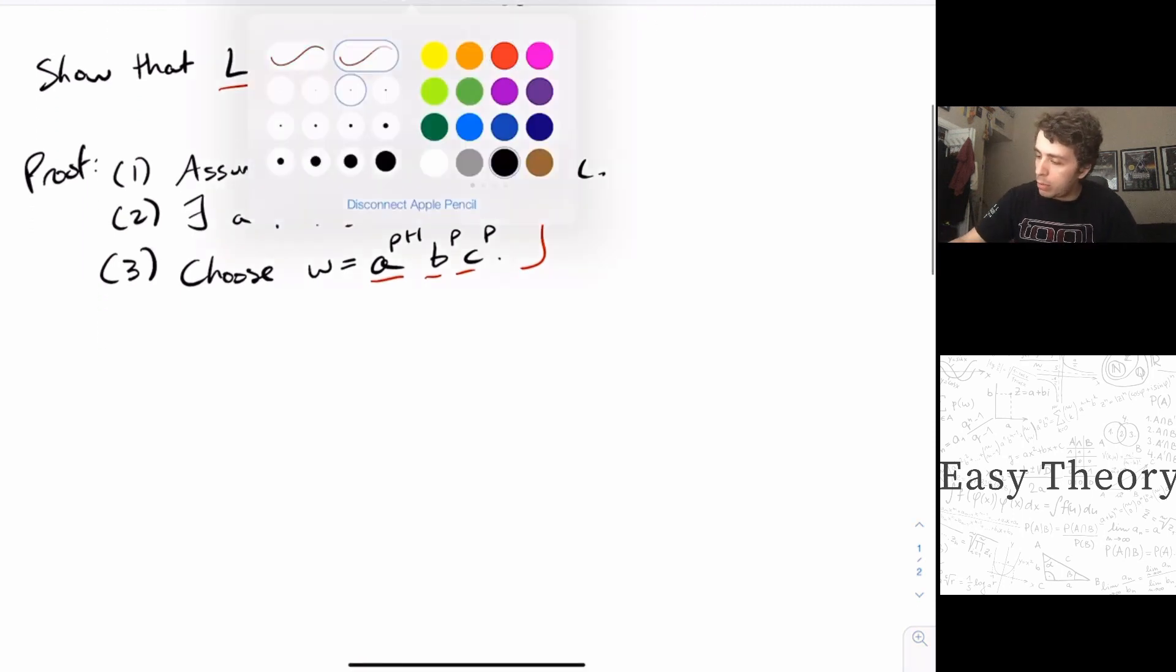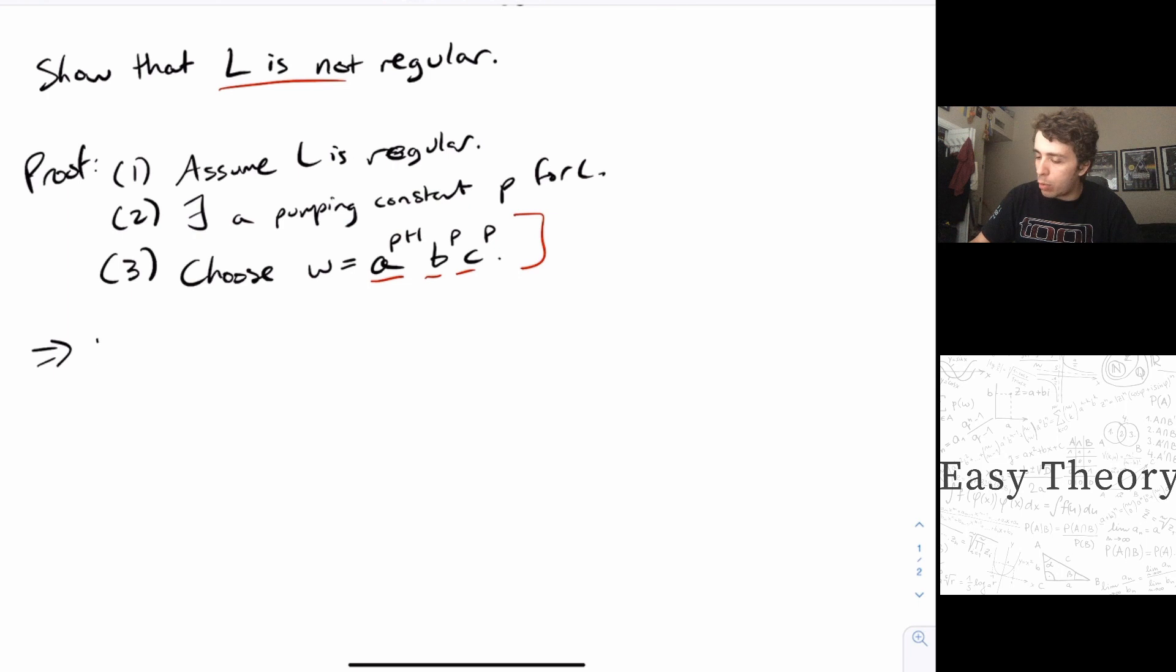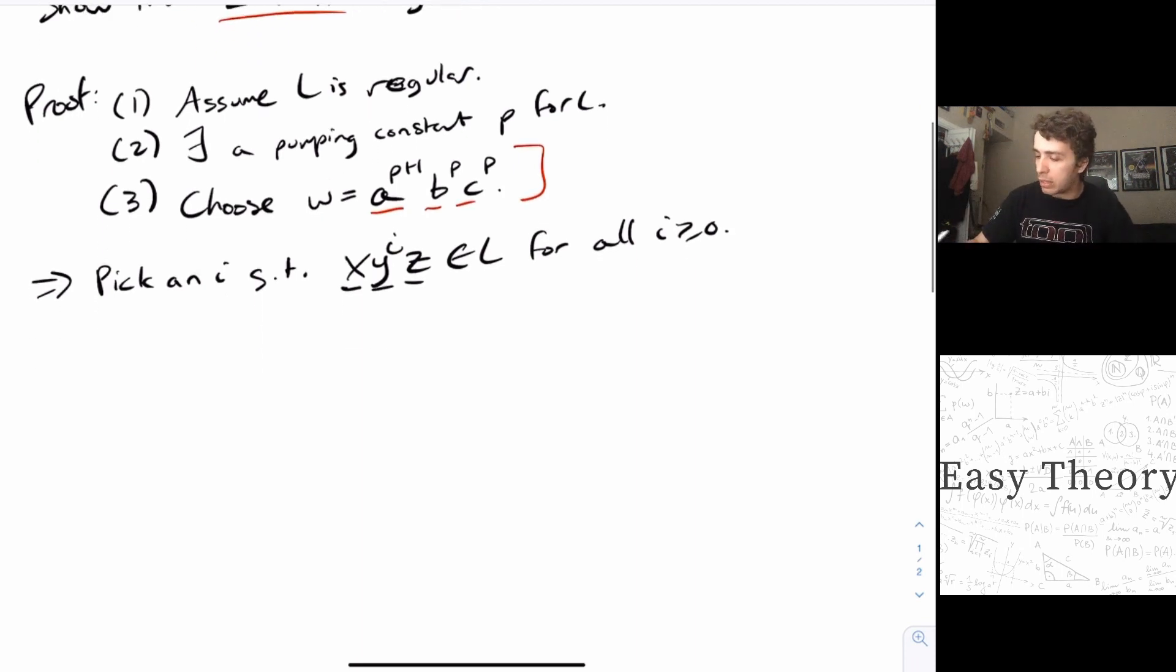So what we want to do now is, as always, pick an i such that x, y to the i, z is in L for all i at least zero. But the problem is, what are these x, y's, and z's? Well, remember, we have to look at every single decomposition of x, y, and z of the string w.